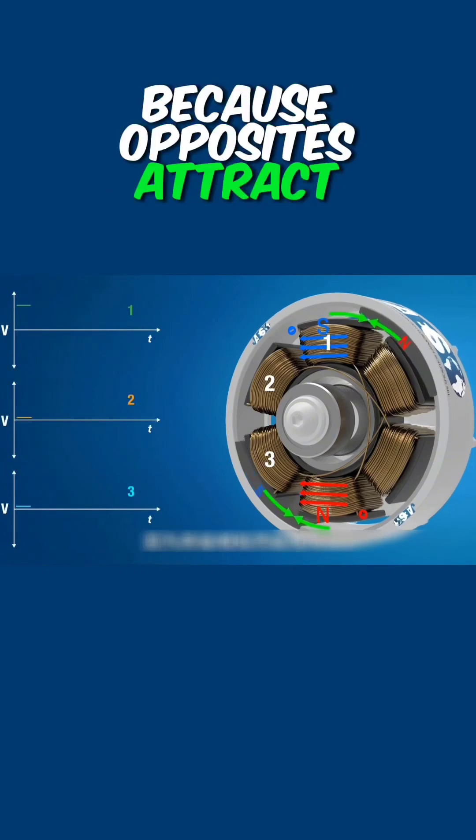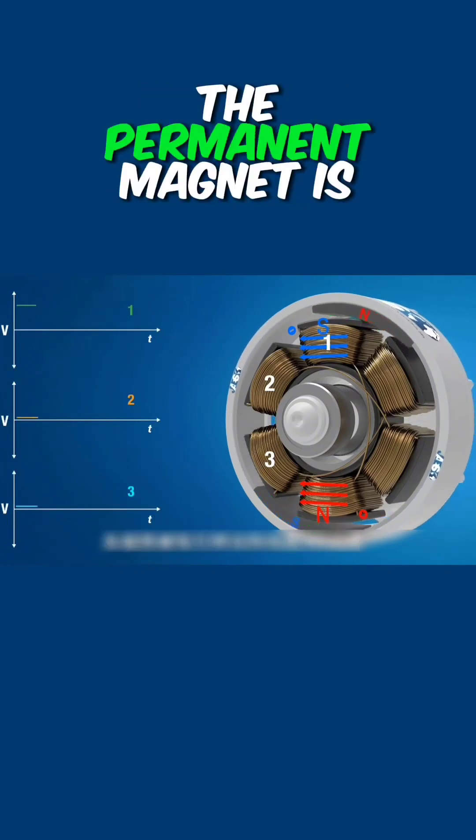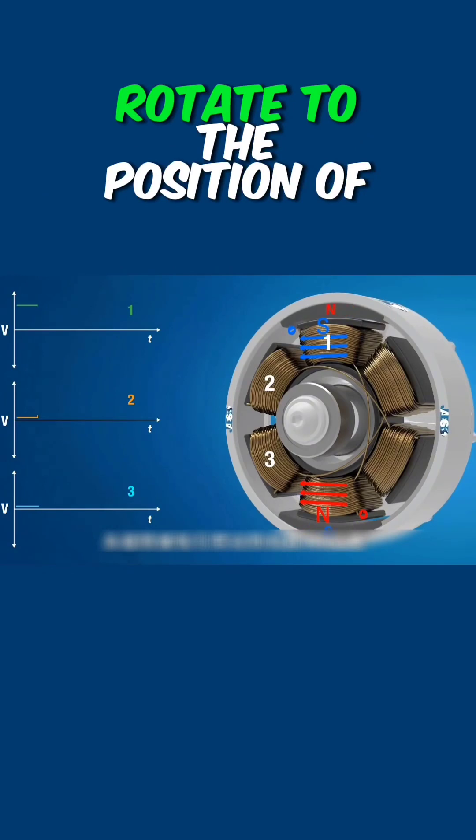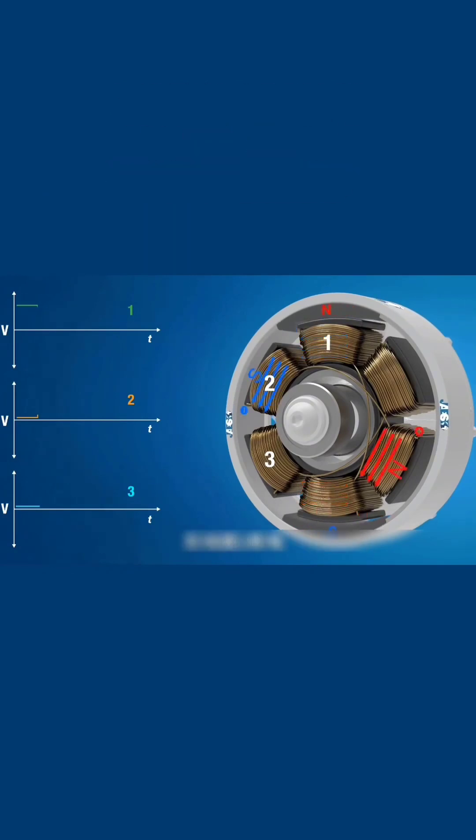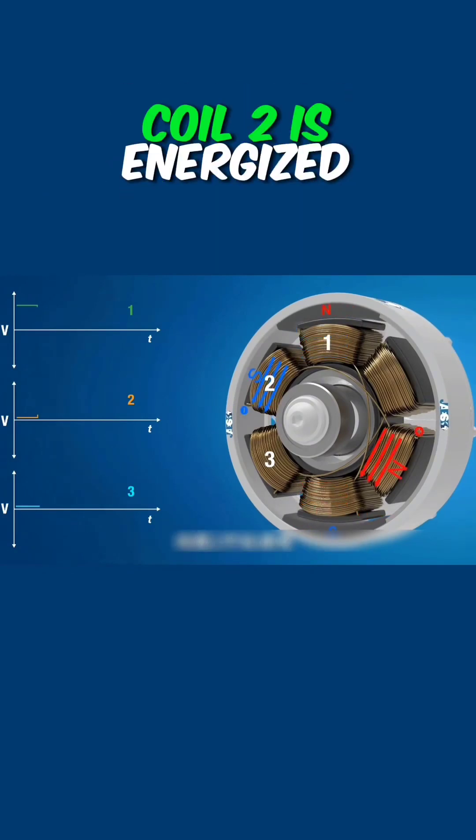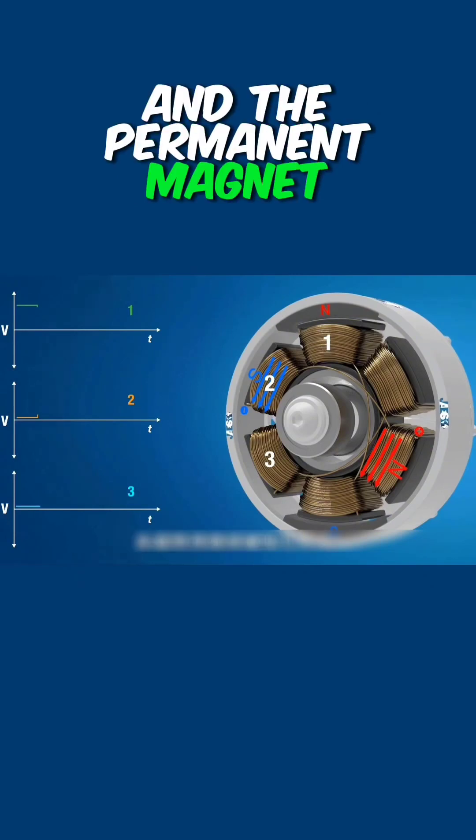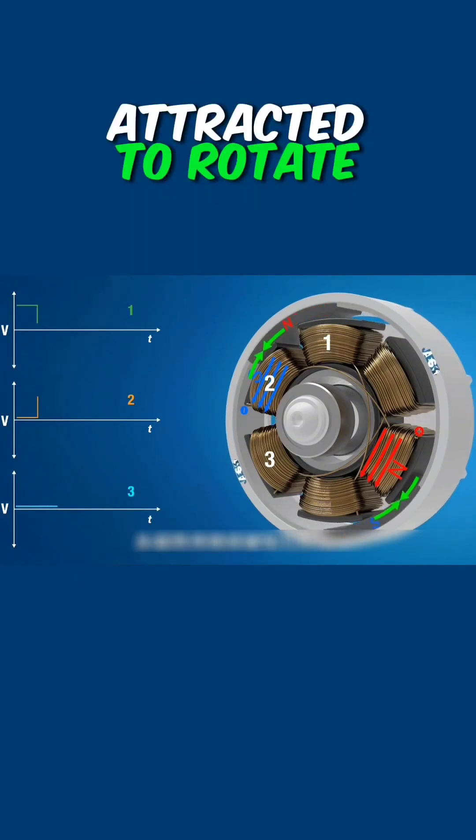Because opposites attract and like poles repel, the permanent magnet is attracted to rotate to the position of coil 1. Then coil 1 is de-energized, coil 2 is energized, and the permanent magnet will continue to be attracted to rotate.